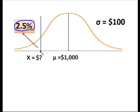So what's the maximum that they can make here, this unknown value of x, and still be in this 2.5%, lowest 2.5%.